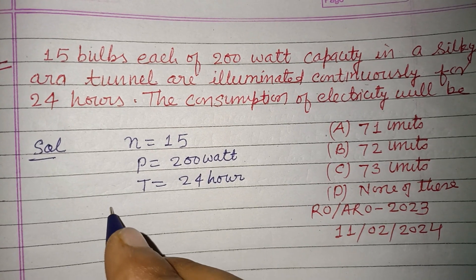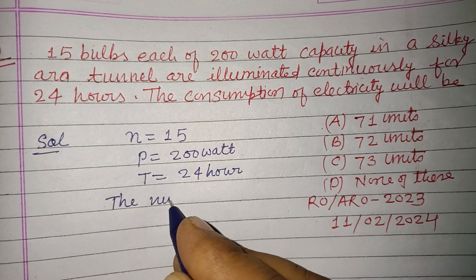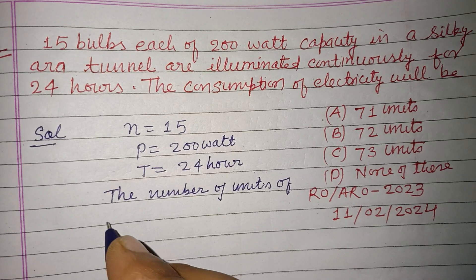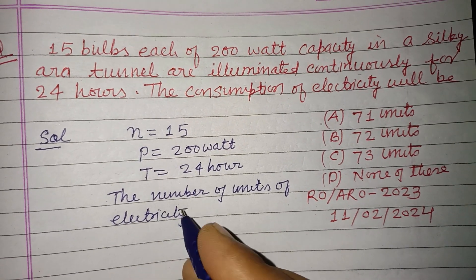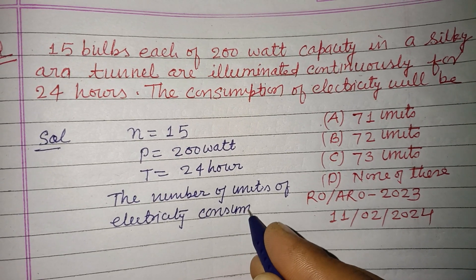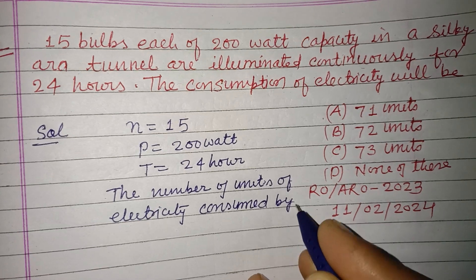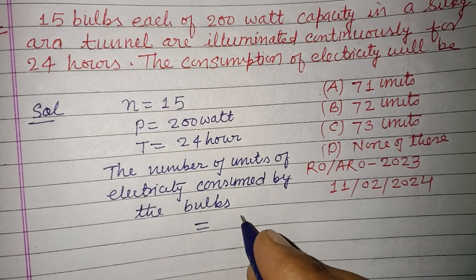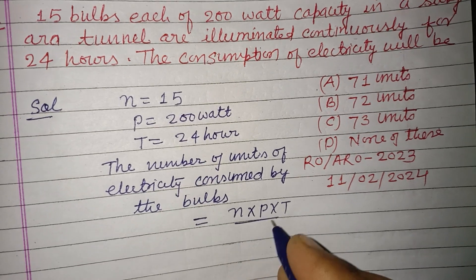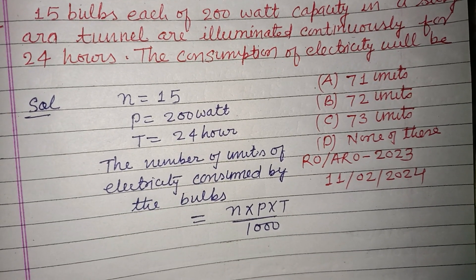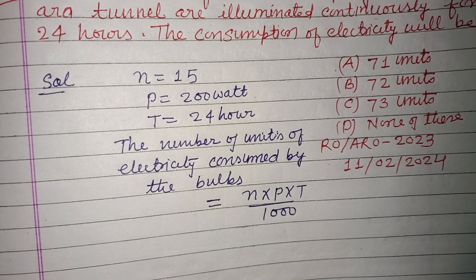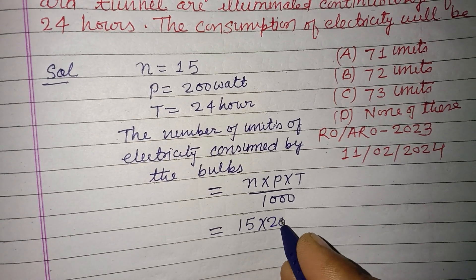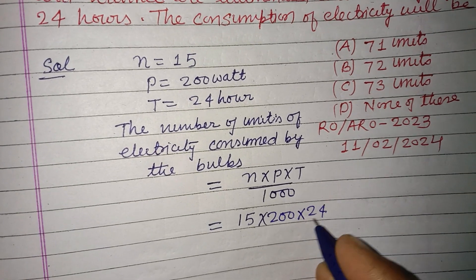So, the number of units of electricity consumed by the bulbs is given by the formula: N × P × T / 1000. This is the formula for finding units consumed by electrical equipment. Here N is 15, P is 200 watt, and T is 24 hours, divided by 1000.